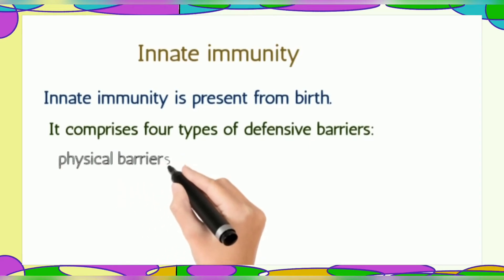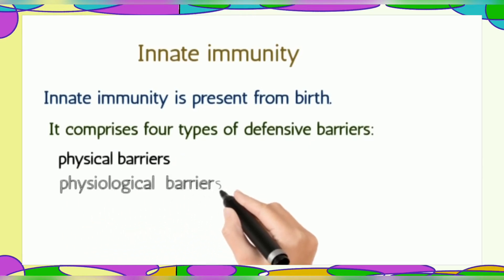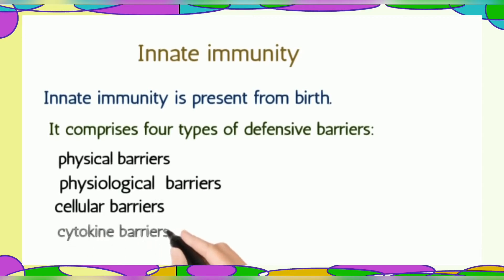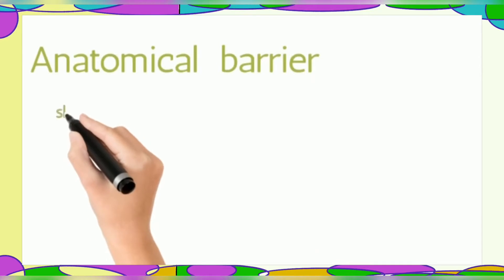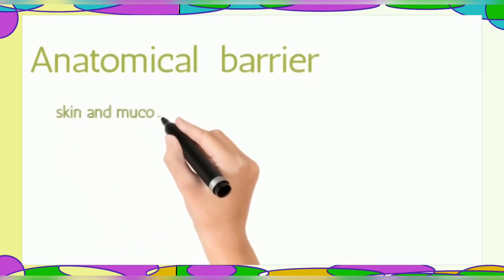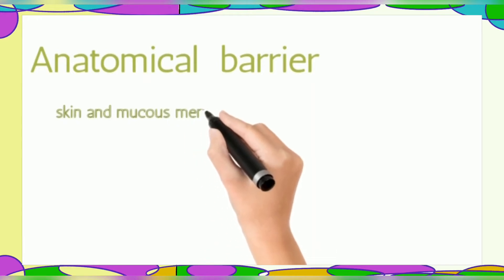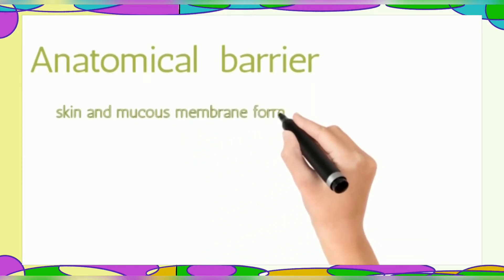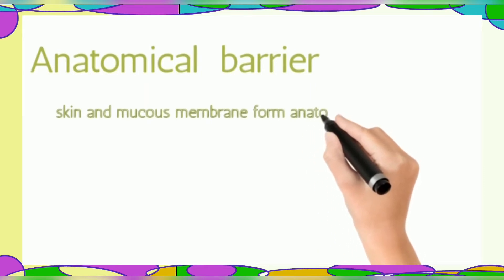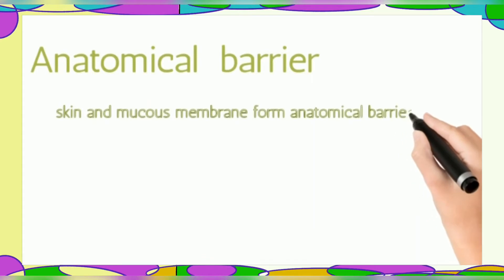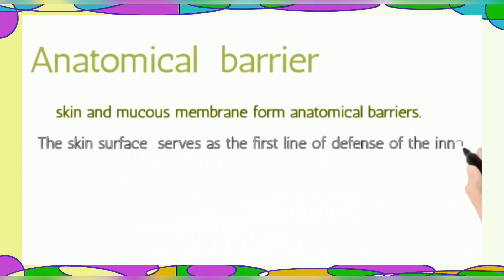The four barriers include Physical Barrier, Physiological Barrier, Cellular Barrier, and Cytokine Barriers. These are also called Anatomical Barriers, which include physical, chemical, and biological barriers. The epithelial surface forms a physical barrier that is impermeable to most infectious agents, acting as the first line of defense against invading organisms.